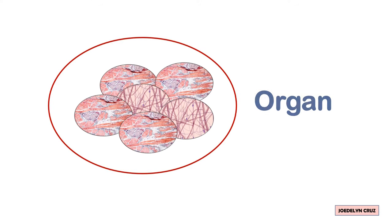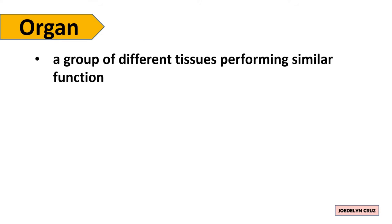When different tissues work together, they make organ. Organ is a group of different tissues performing similar function. The examples of organs are Heart, brain, and lungs.